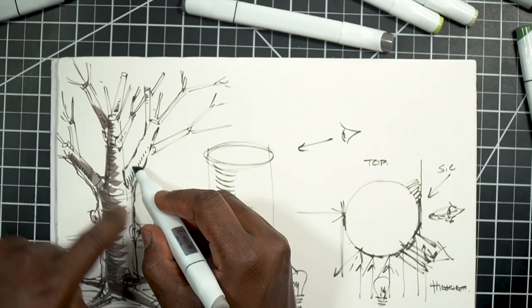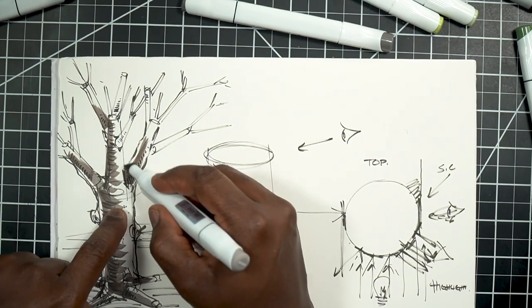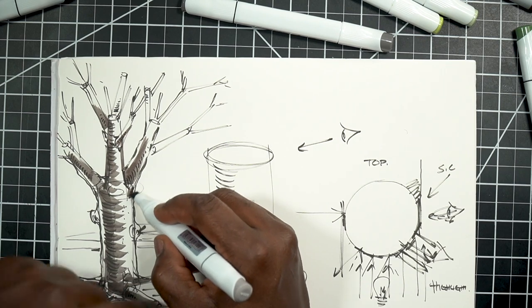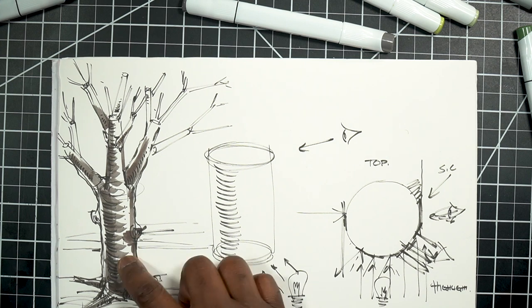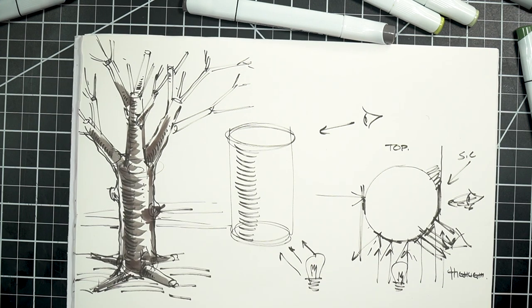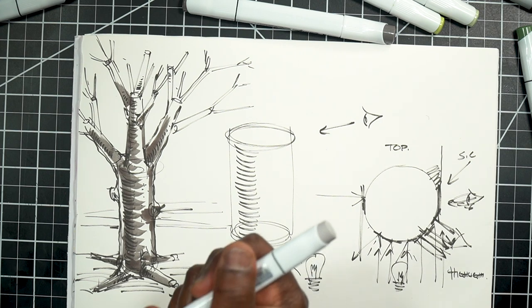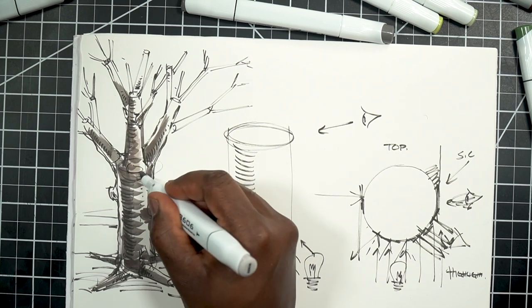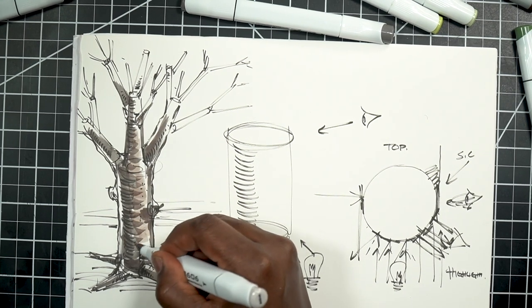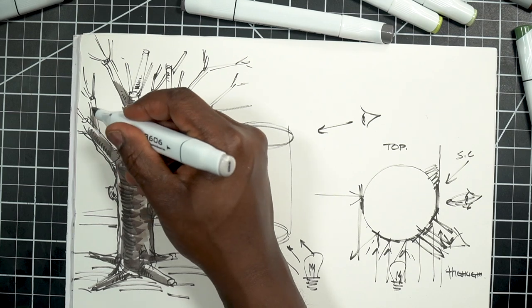And I'm just gonna use this warm gray five to now shade the trunk. And really this depends on the type of tree, but I'm trying to be respectful again of the pen lines. I'm not shading too much into the upper portion of the tree here because I want to reserve a little bit of white paper for the foliage itself.